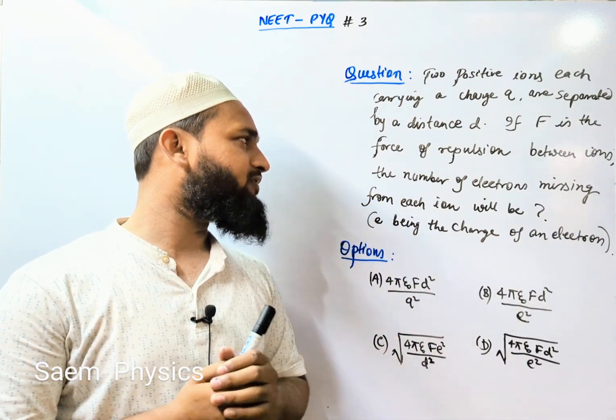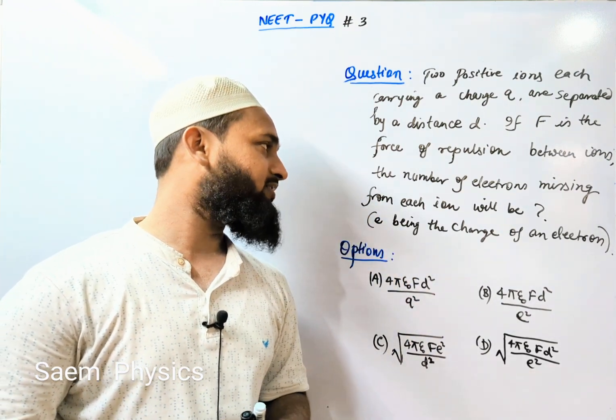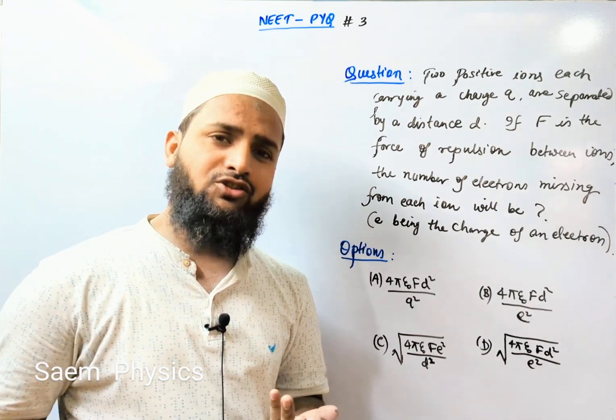If F is the force of repulsion between the ions - haan dono positive ya dono negative hai - the number of electrons missing from each ion will be. Achcha electrons missing raha hai, yaani dono positively charged hai, kitne electrons nikale hai.